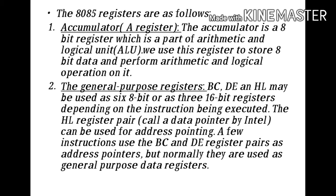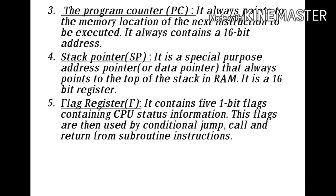The valid register pairs available are BC, DE, and HL. The user cannot form a register pair of their own choice, such as AC or DB. A few instructions use the BC and DE register pairs as address pointers, but normally they are used as general purpose data registers.